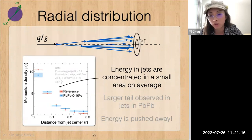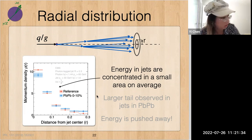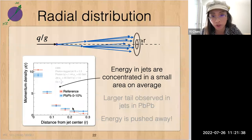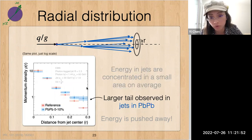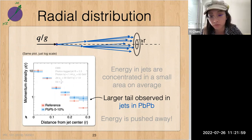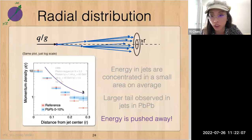We can also look at the radial distribution of jets — how momentum is distributed as a function of distance to the jet axis, measuring momentum density as a function of distance. Energy in jets is concentrated in a small area on average; by 0.2 in radius, most of the momentum is already contained. However, looking at the log-scale plot to focus on the tail, we see a much larger tail observed for jets in heavy ion collisions. In other words, energy is pushed away from the jets as a result of interaction with the QGP.